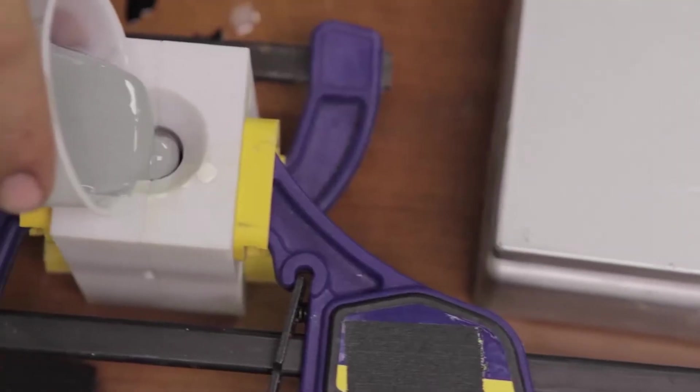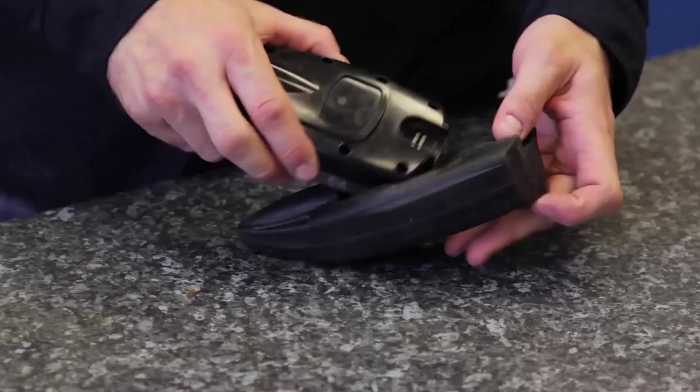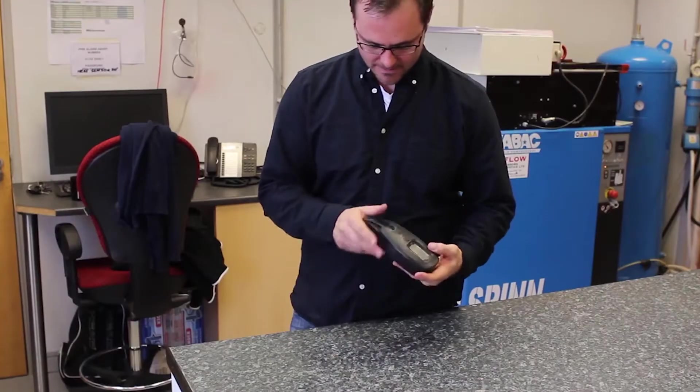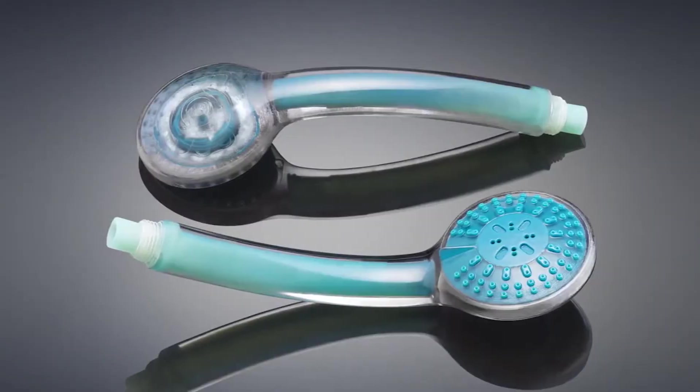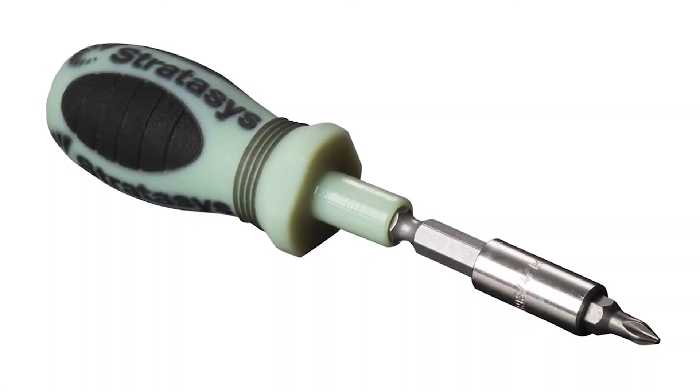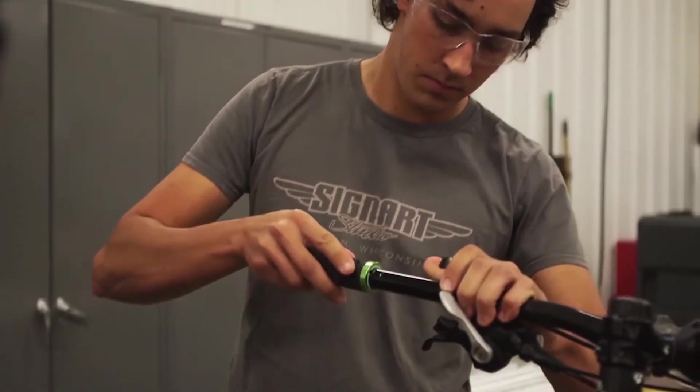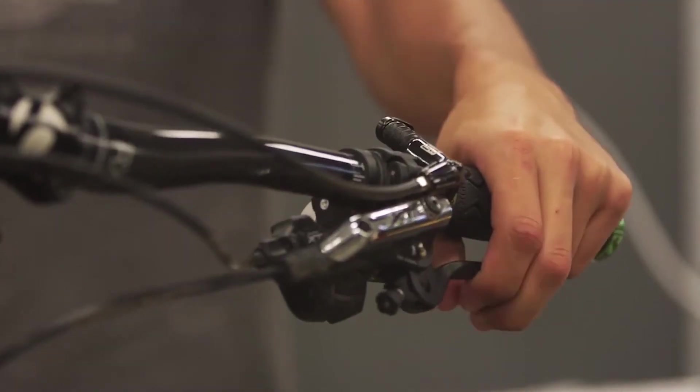Traditionally, products are divided into individual pieces, one for each material and color, and made separately. With multi-material 3D printing, parts and assemblies are produced in just one step, making the prototyping process efficient, fast, and inexpensive.